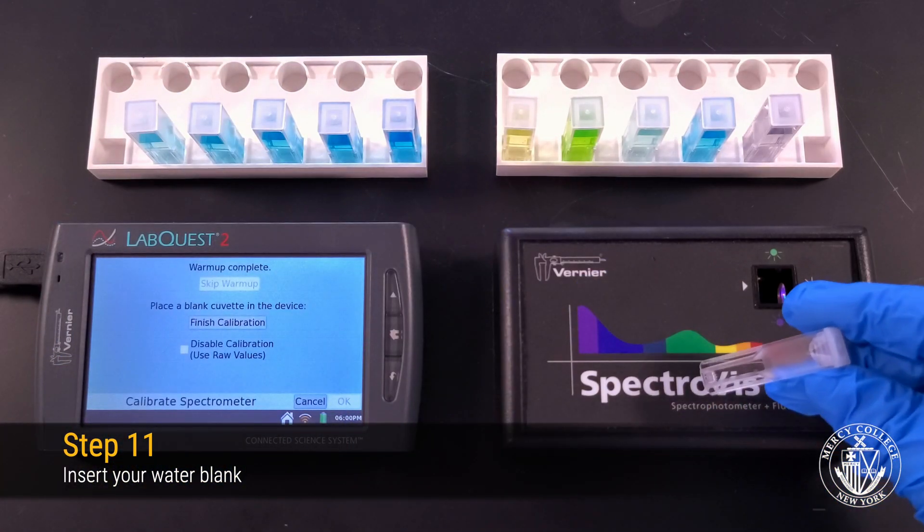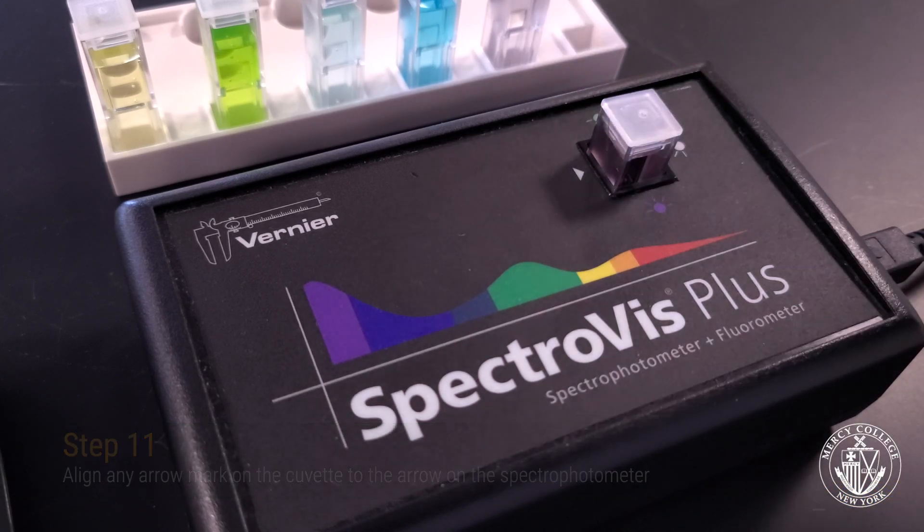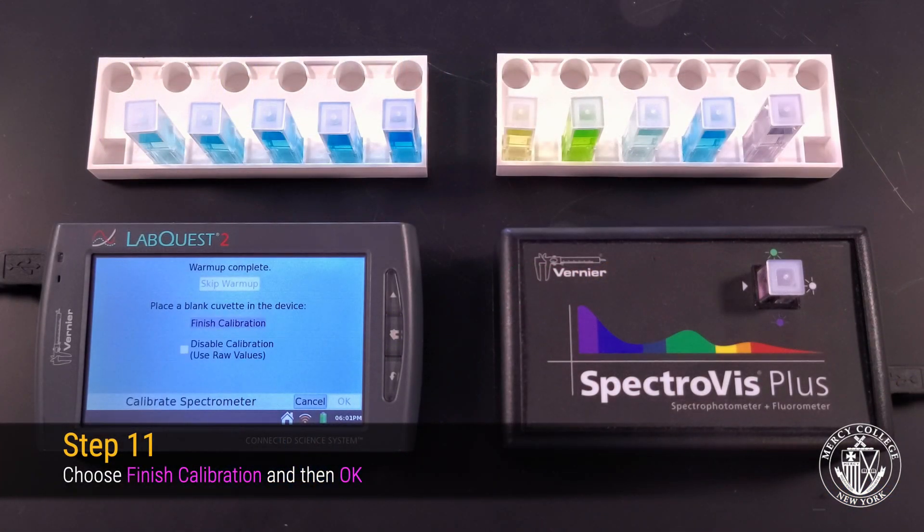As before, make sure that the arrow on the cuvette is lined up with the arrow on the spectrophotometer. Then click Finish Calibration and OK.